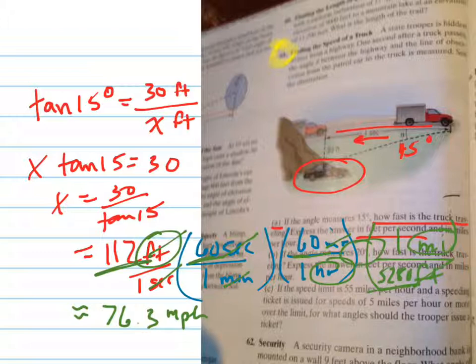And another question says, if the speed limit is 55 miles per hour and the speeding ticket is issued for speeds of 5 miles per hour or more over the limit, so that would be 60 miles per hour, for what angles should the trooper issue a ticket?